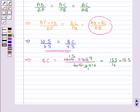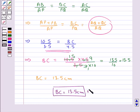So we get that BC is equal to 13.5 centimeters. Hence our final answer is BC equal to 13.5 centimeters. This completes the session. Hope you have understood the solution for this question.